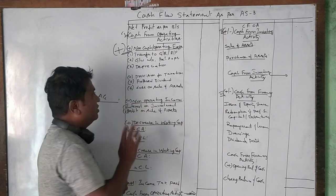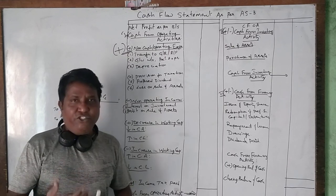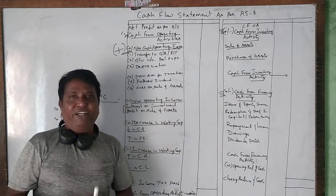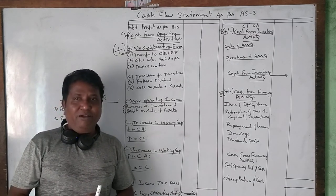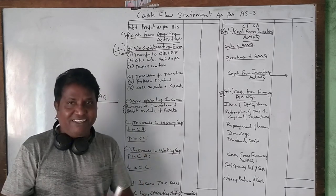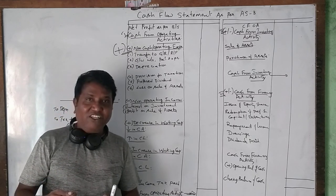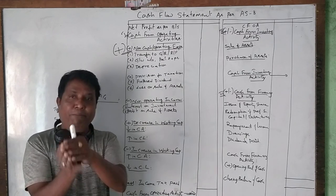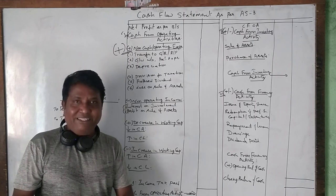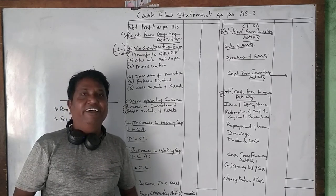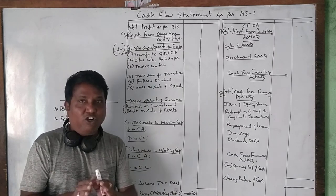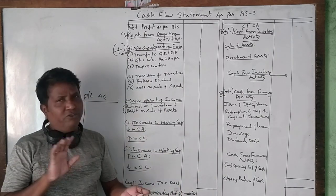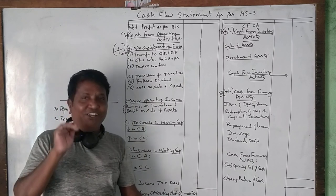Provision for taxation is another non-cash item. Whatever profit you earn from 1st April to 31st March, you pay tax in the next year, so you set aside a portion of profit for that purpose. It is a genuine business expense, but it has not been paid yet — it is merely kept aside for future tax payment. Therefore, provision for taxation is also considered a non-cash expense and is added back.